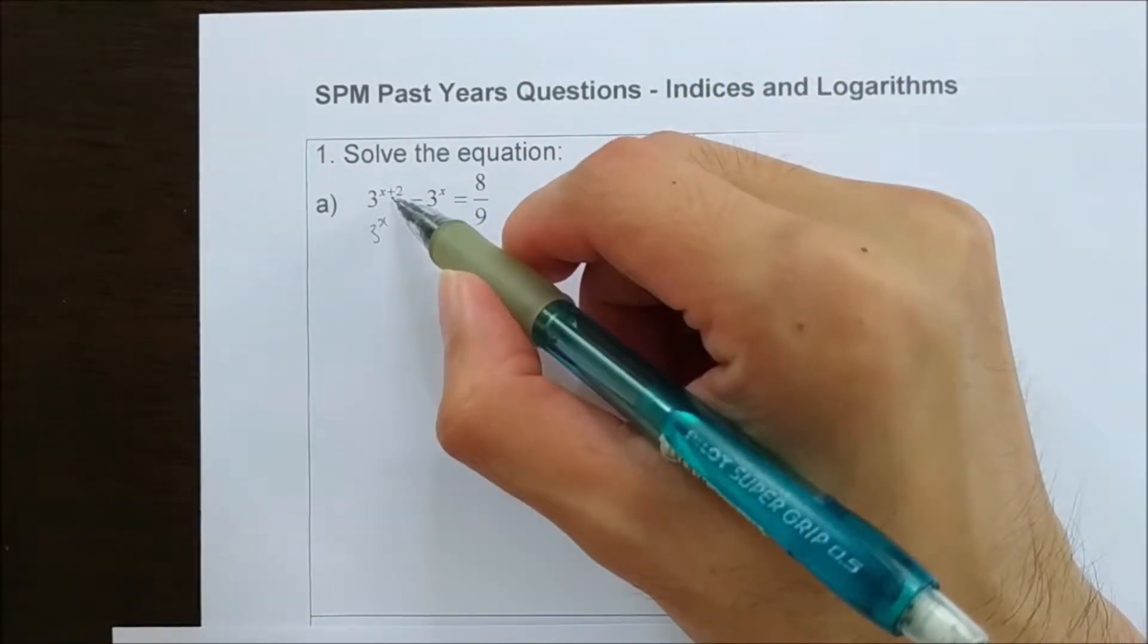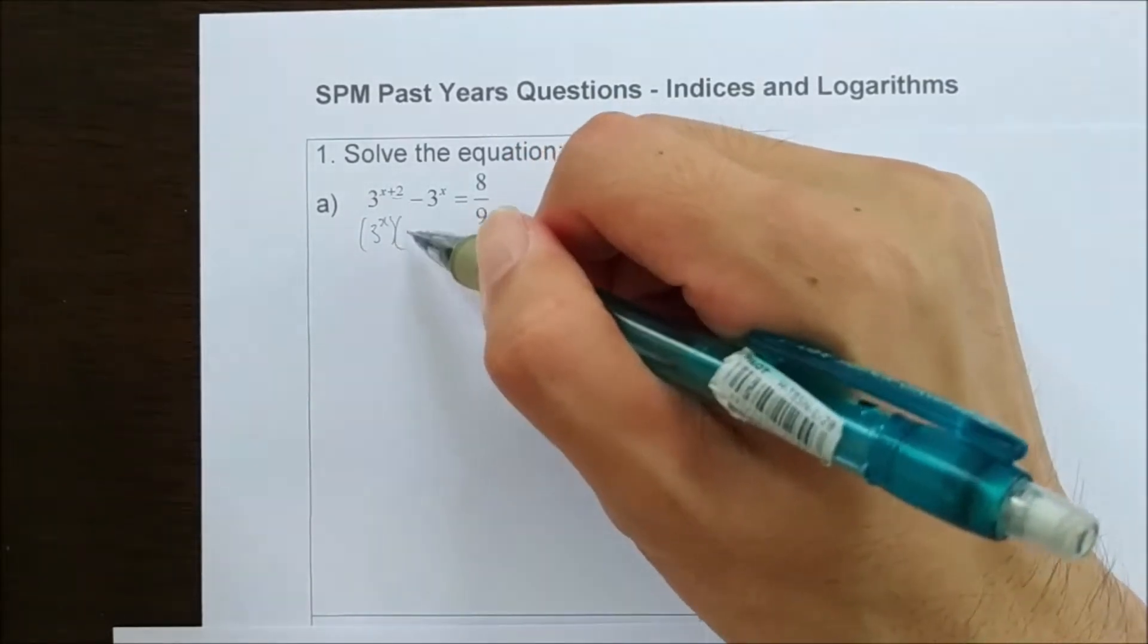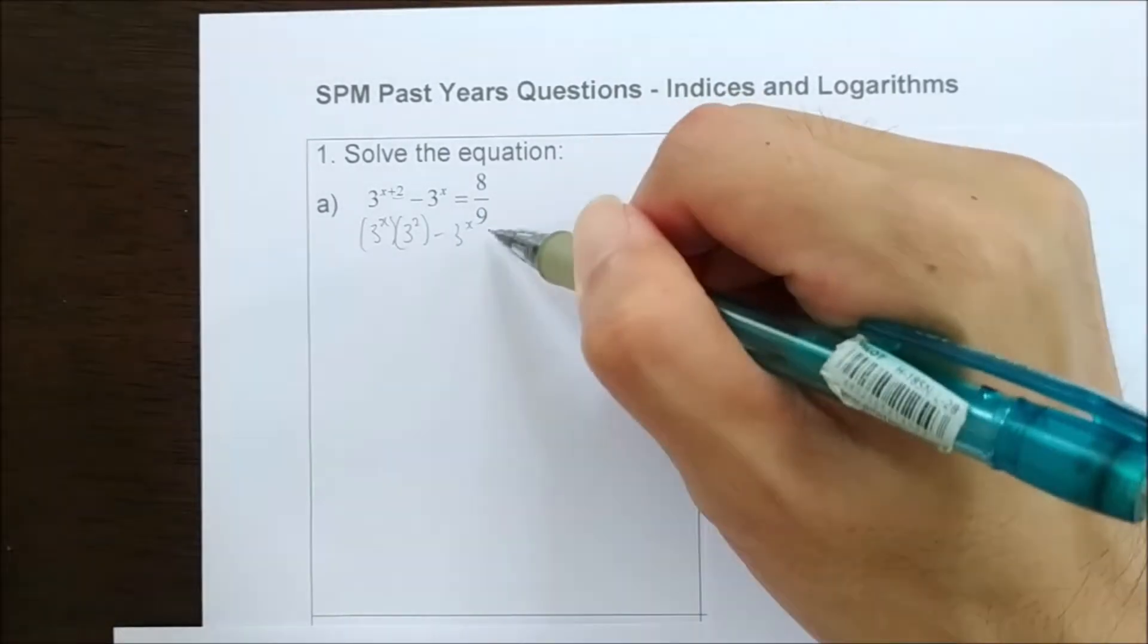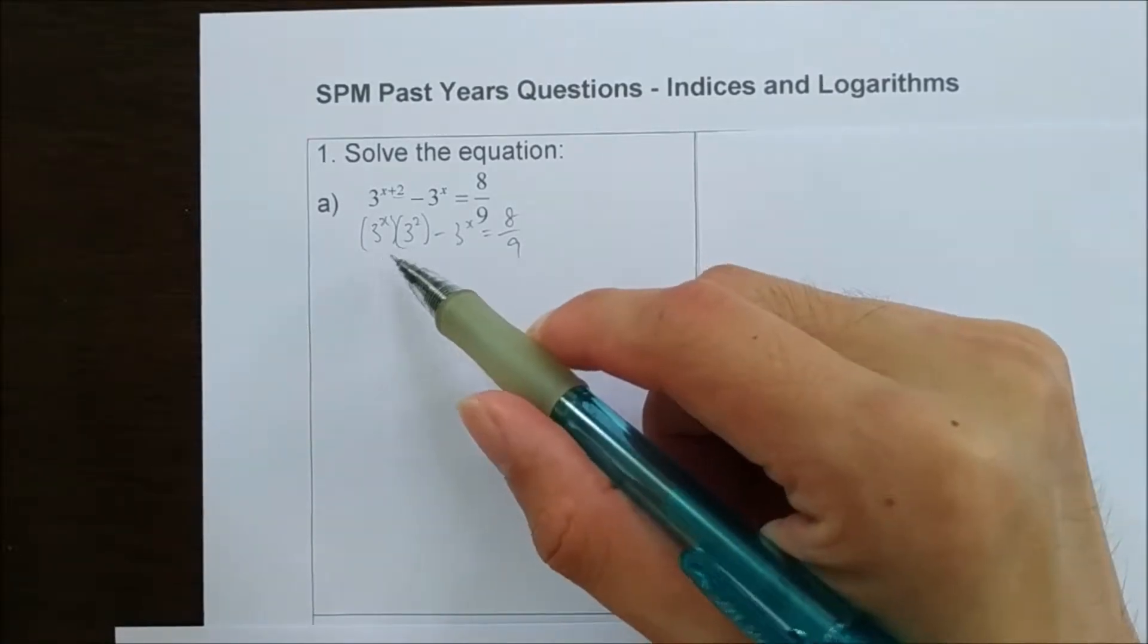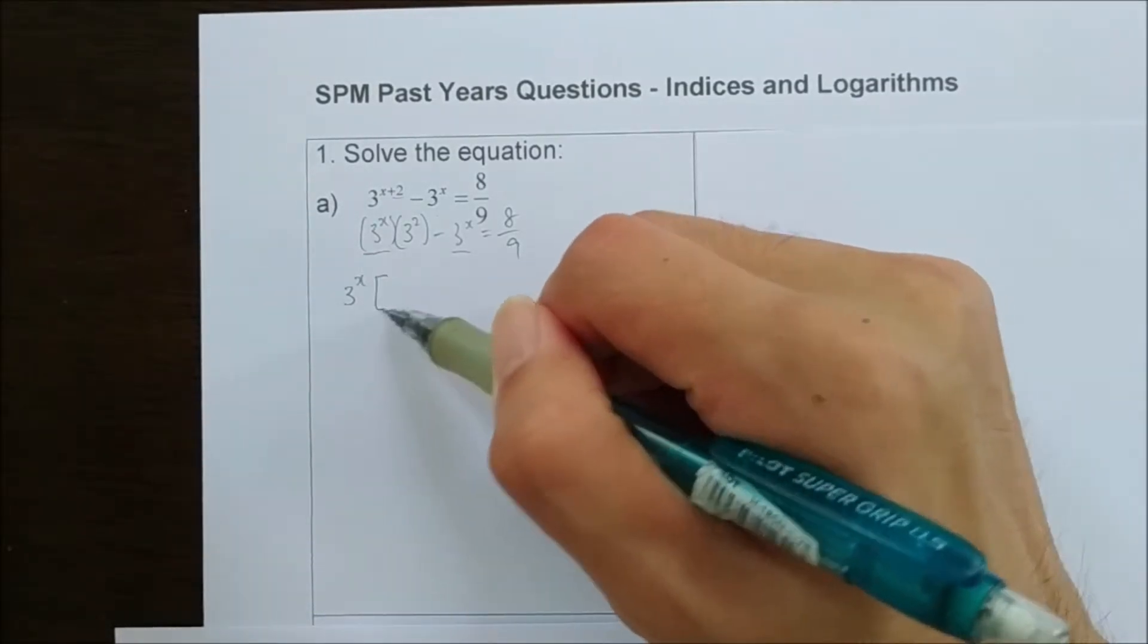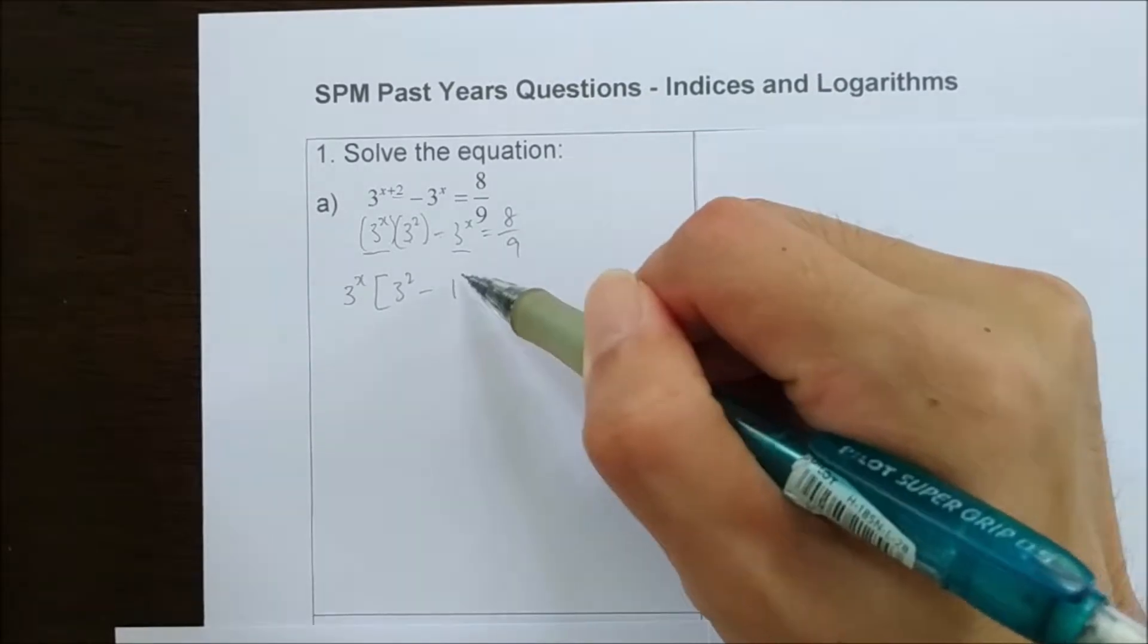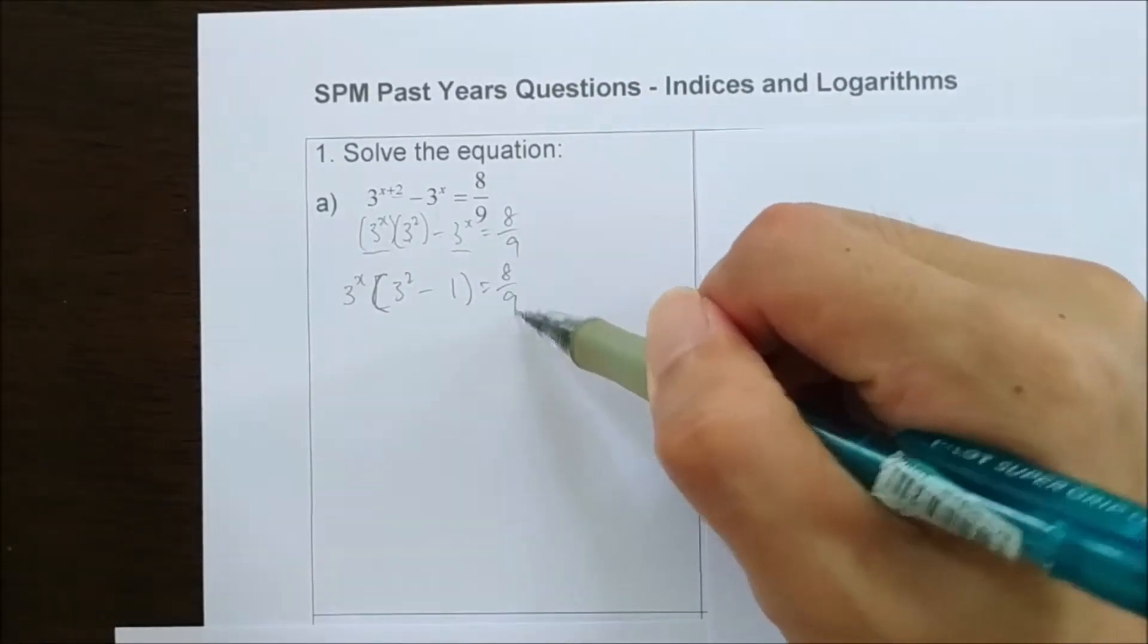When the power here shows plus 2, it's actually 3^x times 3 to the power of 2. After we form this, it's easier for you to see that we can factorize this. You get 3 to the power of x and then what is left here is 3 to the power of 2 minus 1 equals 8 over 9.